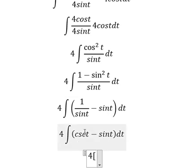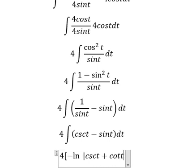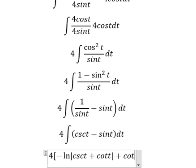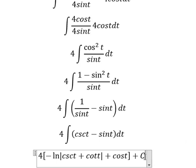The integral of cosecant t equals negative ln of the absolute value of cosecant t plus cotangent t. The integral of sine t with the negative equals positive cosine t, and we add the constant.